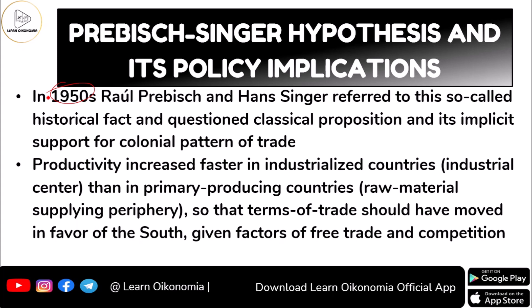As per this evidence, productivity increases faster in industrialization — meaning advanced nations, which you call the industrial center — compared to primary producing countries, known as the periphery. The terms of trade should have moved in favor of the south even according to classical factors, but that is what the classical approach claimed.